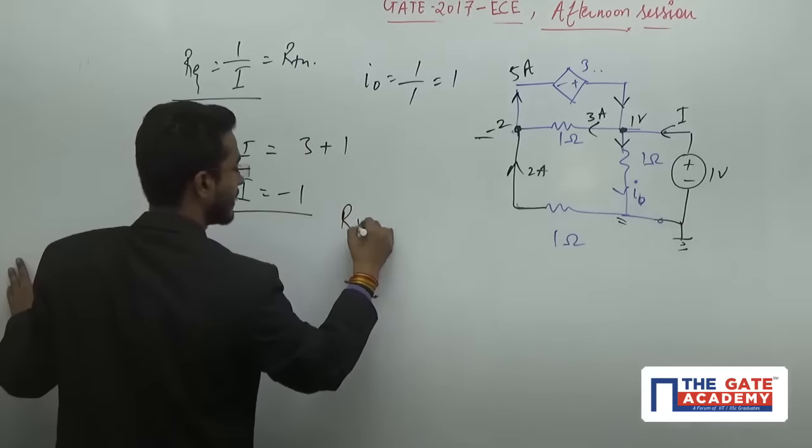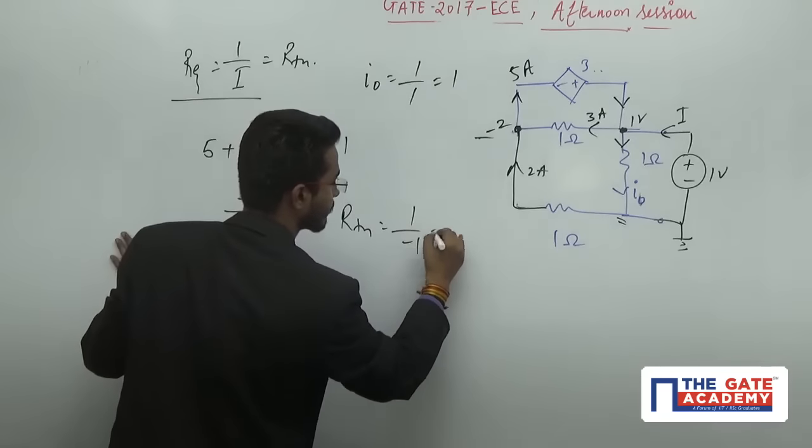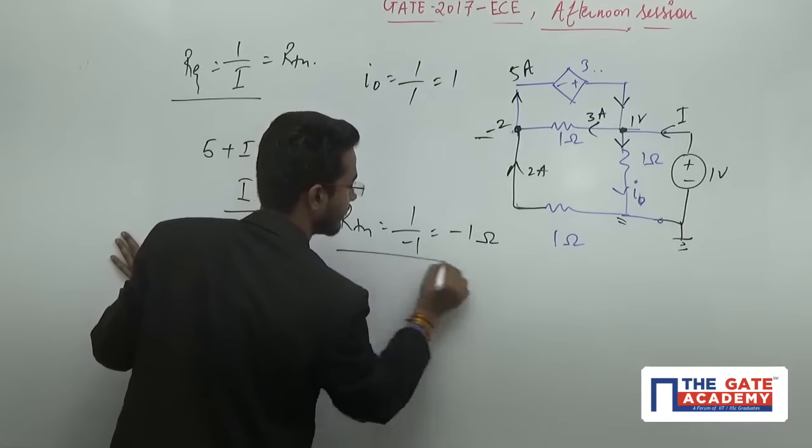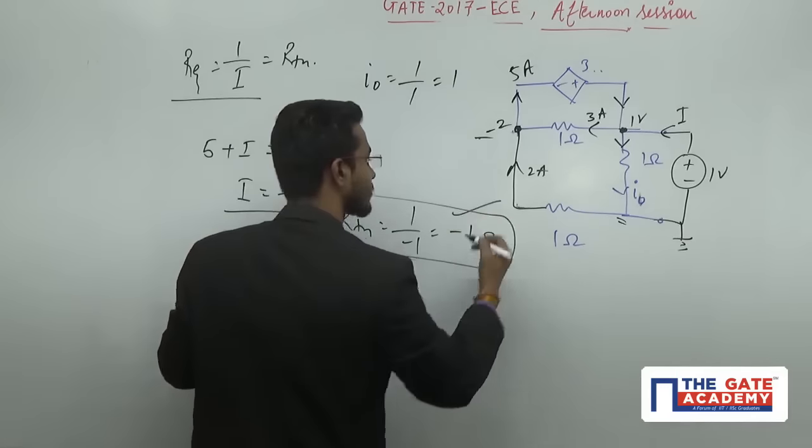RTH equals one divided by minus one, which equals minus one. This is your correct answer: minus one.